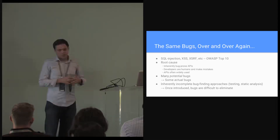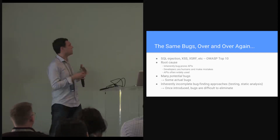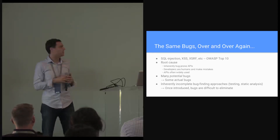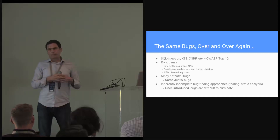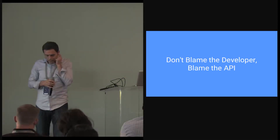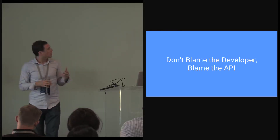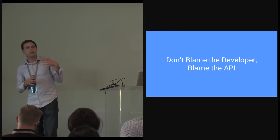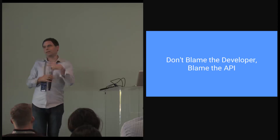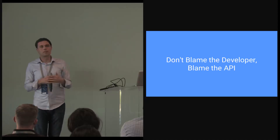Unfortunately, the approaches at our disposal are inherently incomplete. We're relying on static analysis tools that are inherently incomplete, on testing, on human code review. We'll never find all the bugs once they're introduced, and so we're going to ship some of them to production. So what I'm essentially proposing is to take the view that really the problem is with the API — not with the developer who is making mistakes. The problem is that we have designed APIs that permit the introduction of bugs that are secondary or orthogonal to the primary purpose of the API, and in particular, bugs that result in security vulnerabilities.